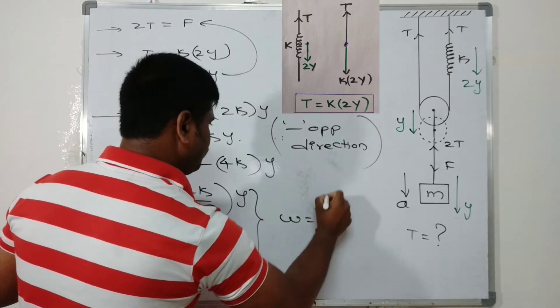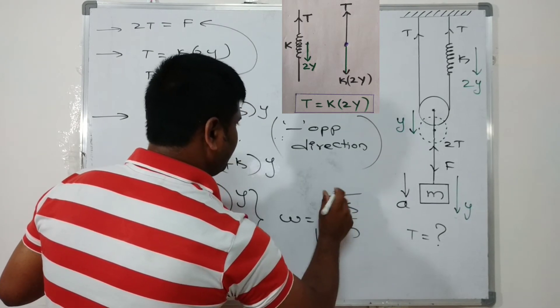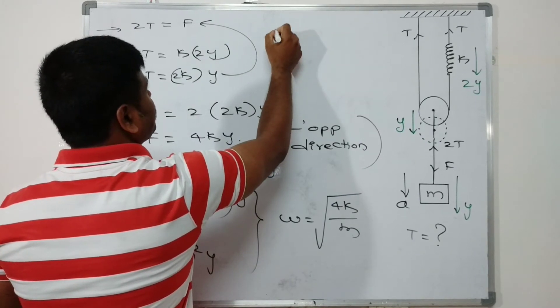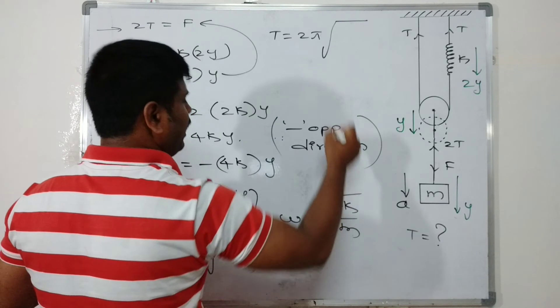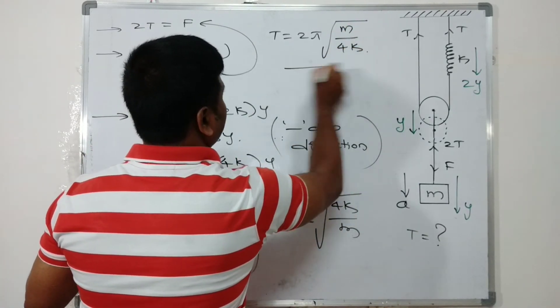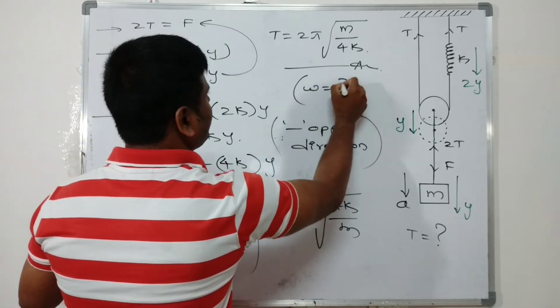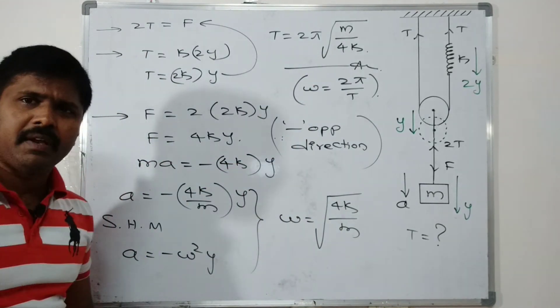So time period T = 2π/ω = 2π√(m/4k) is the answer for the given question. This is the general formula where ω = 2π/T.